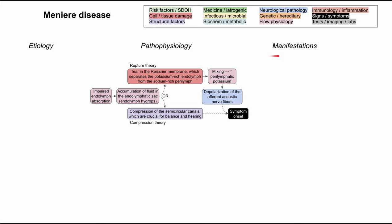Before we talk about the manifestations, let's work through the etiology, and this will be pretty short. In short, the etiology is idiopathic. We don't know exactly what causes Meniere disease, and we don't know if it's just one cause or if there are multiple causes and multiple triggers.